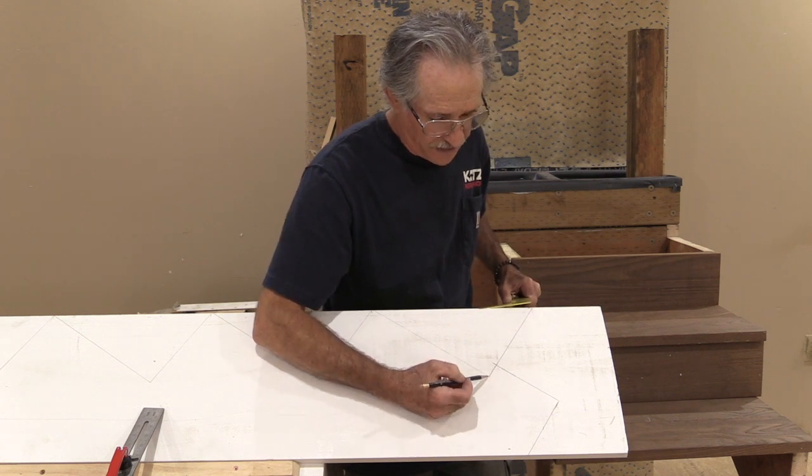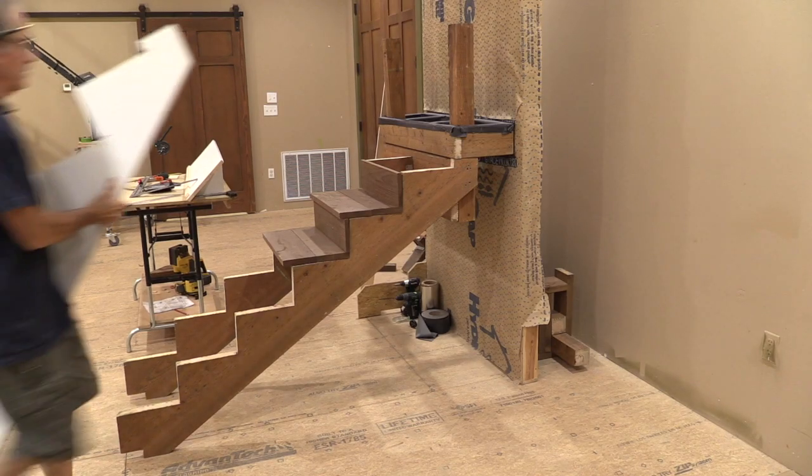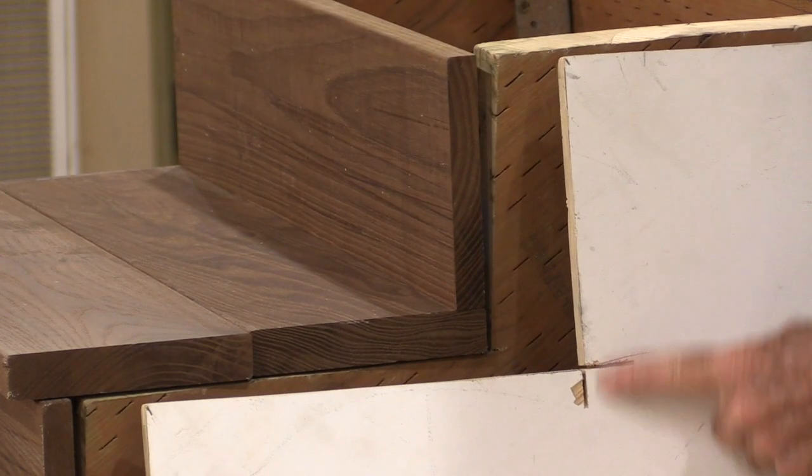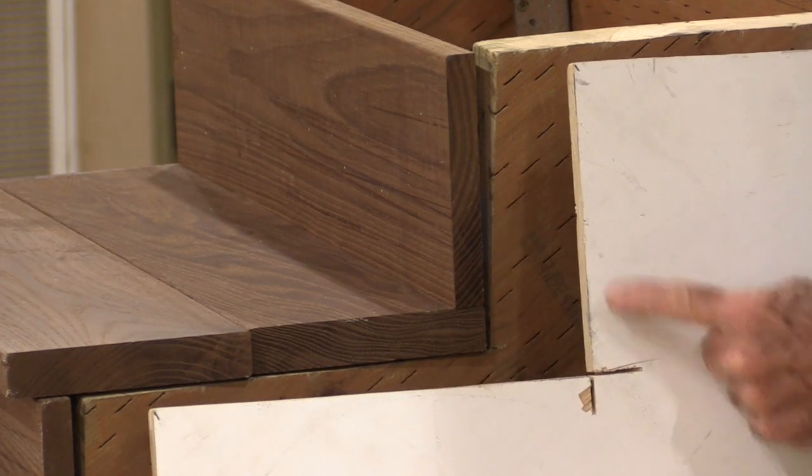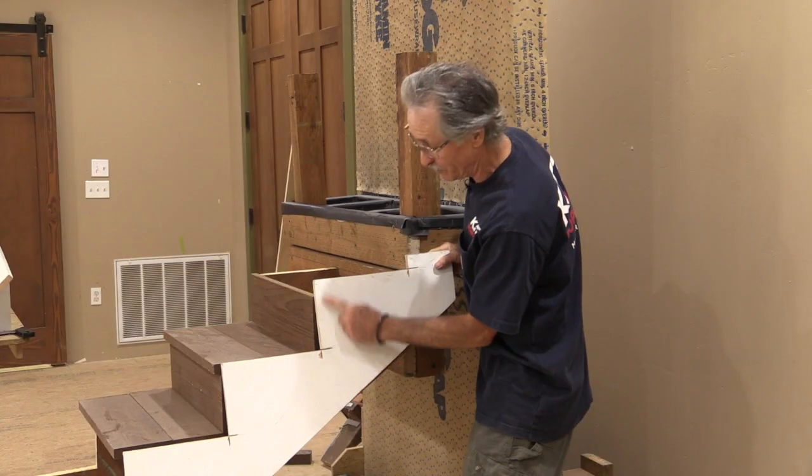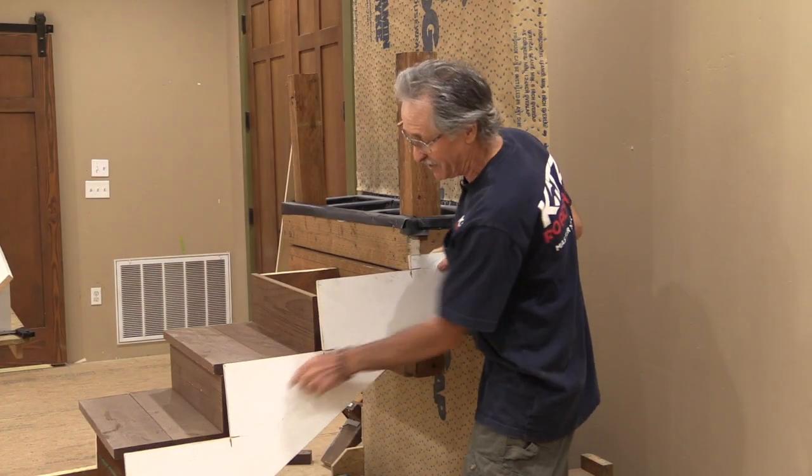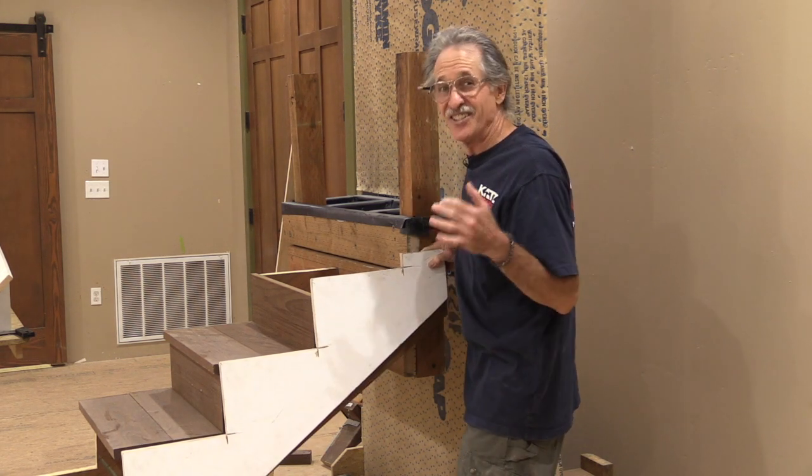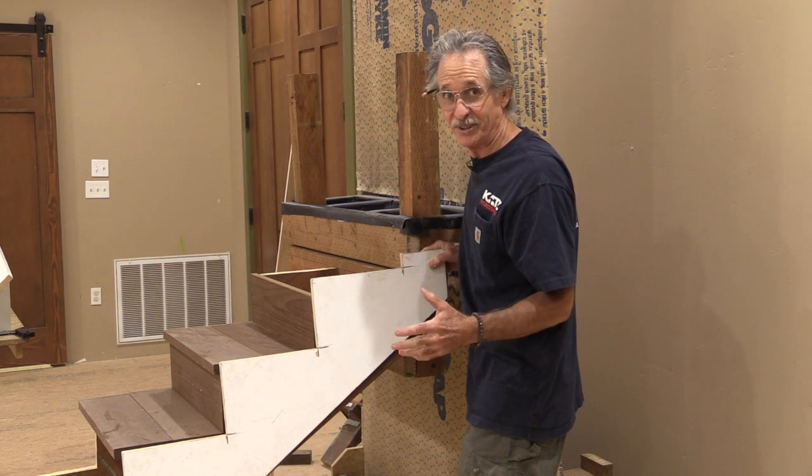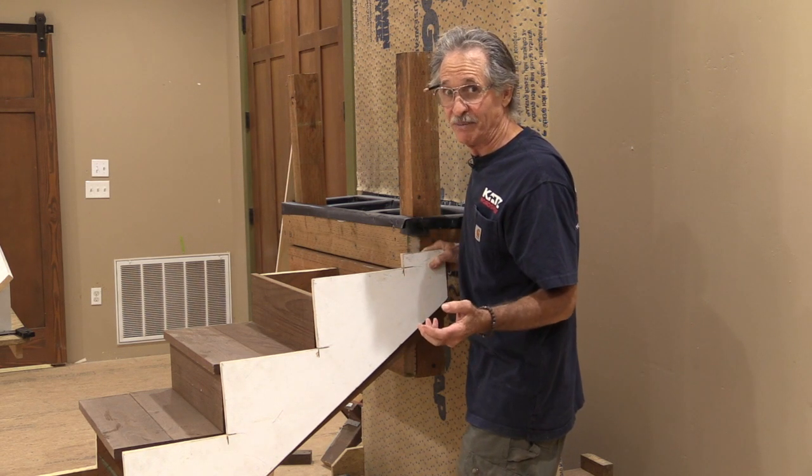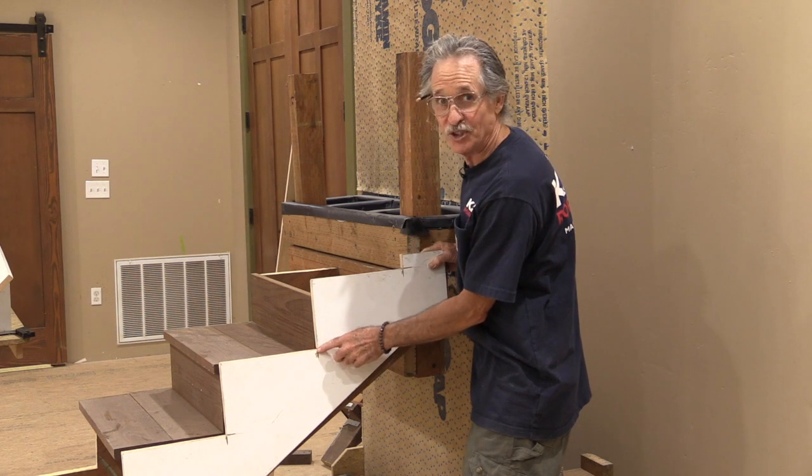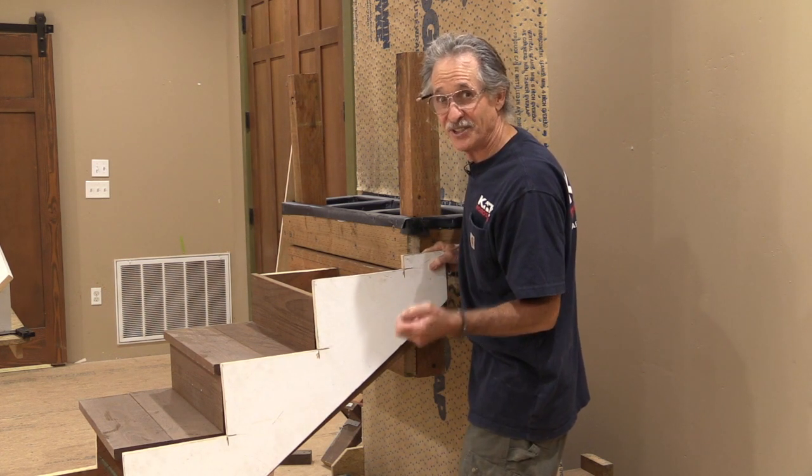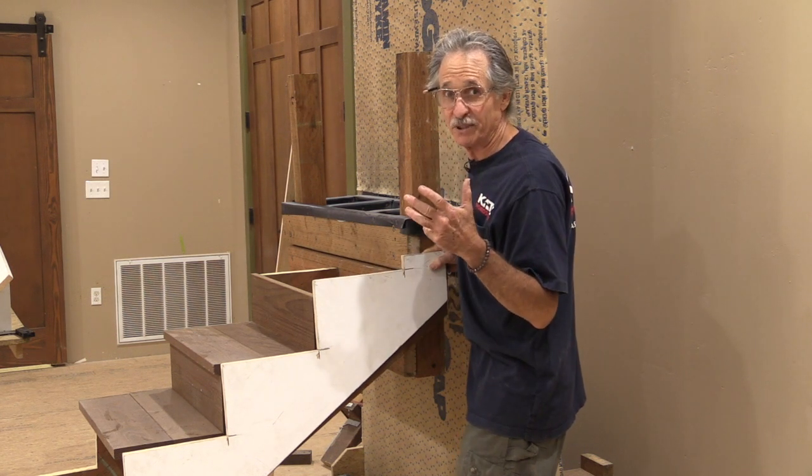Here is our finished template. And you'll notice I cut every single one of these out with a circular saw. No jigsaw. I went right past the intersection on every one of these treads and risers so I could get a perfectly straight line. That's another advantage to using a template. If you're using an actual stringer as a template, you'd have to stop and switch to a jigsaw. And then you start tracing a line with a pencil from that template to the next one. And you get off all over the place.